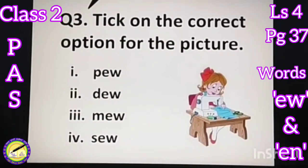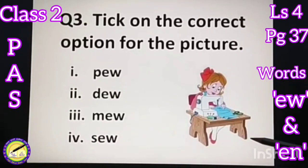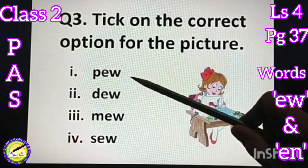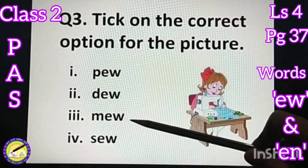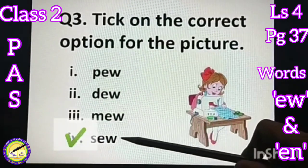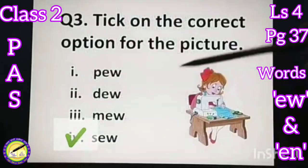Question number three: tick on the correct option for the picture. Look at the picture and find out the correct option according to it. Pew - no. Dew - no. Mew - no. Last one, Sew - this is the correct option. Let's put a tick on it.